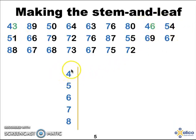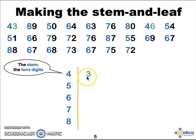You've already got the 40 parts of the 43 and the 46 in your stem. So we need to write the 3 of the 43 and the 6. So we simply write those two numbers next to each other and we read 43 and 46.